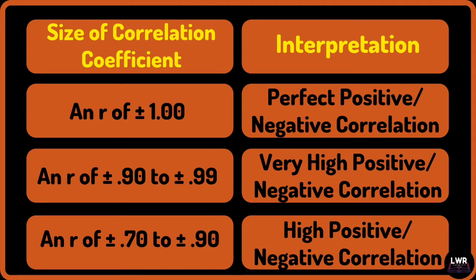An r of positive or negative 0.90 to 0.99 is a very high positive or negative correlation. An r of positive or negative 0.70 to 0.90 is a high positive or negative correlation.